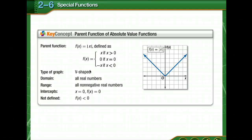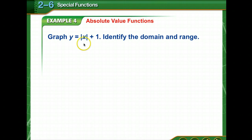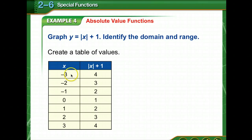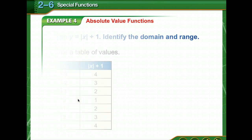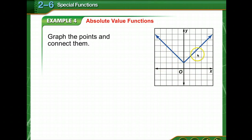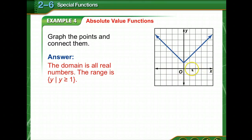Let's look at the key concept of the absolute value function. Notice that absolute value graphs are in the shape of a V. We are to graph y equals the absolute value of x plus 1 and identify the domain and range. First, create a table of values — if x is negative 3, y would be 4, and so on. Graph the points and connect them. When we have an absolute value in the equation, if it's not the shape of a V, we've done our math wrong. The domain is all real numbers, and the range is y such that y is greater than or equal to 1.